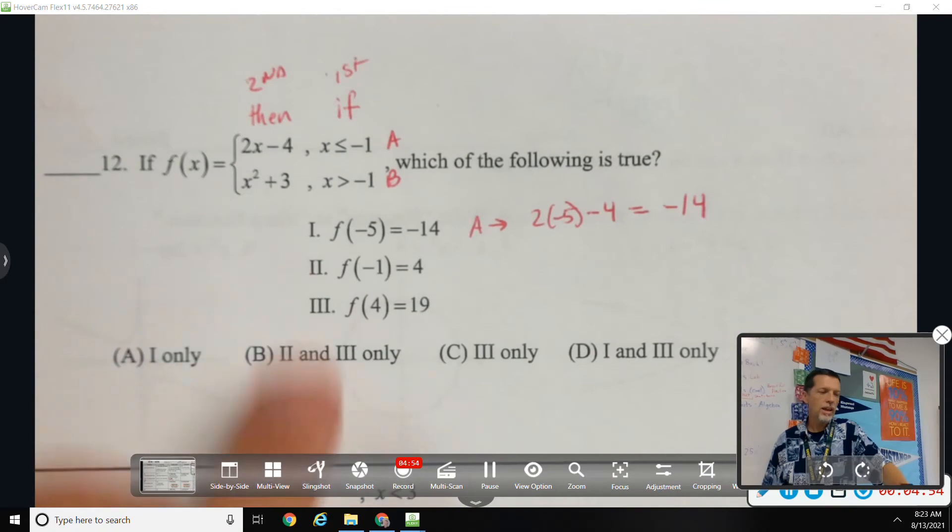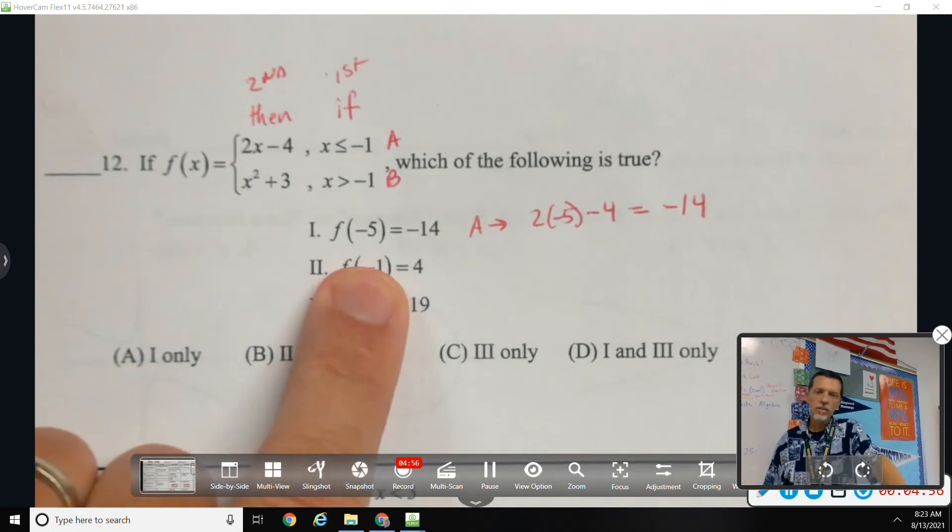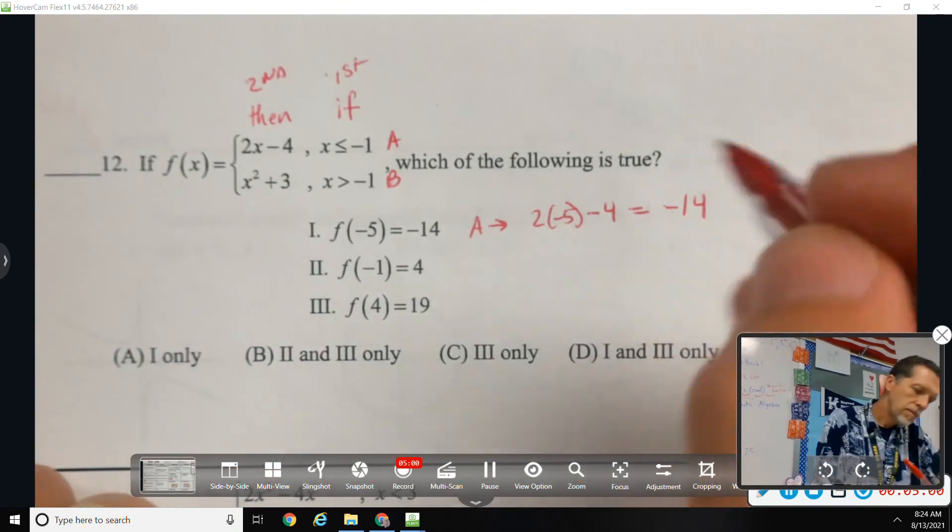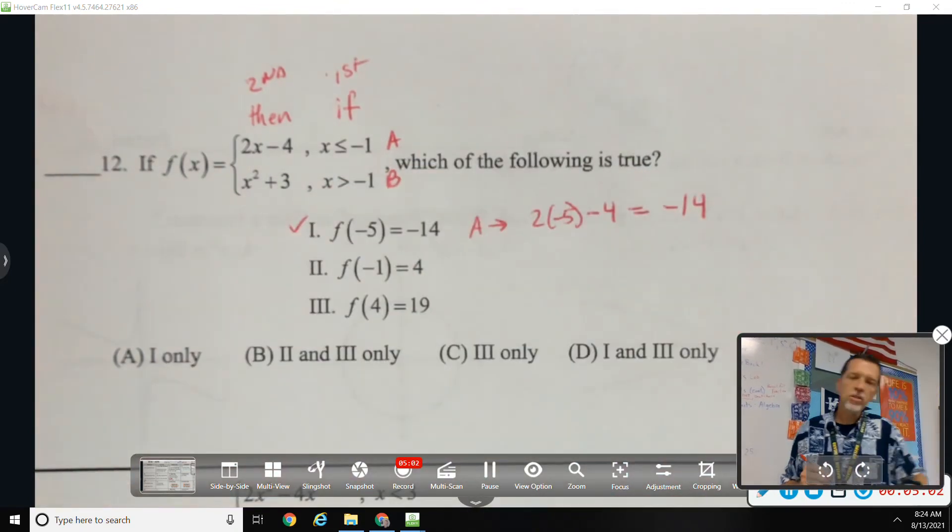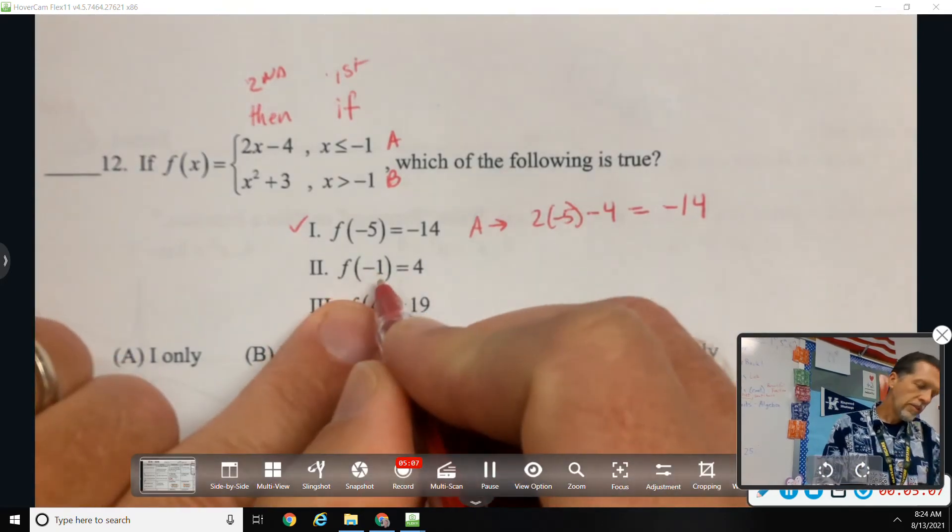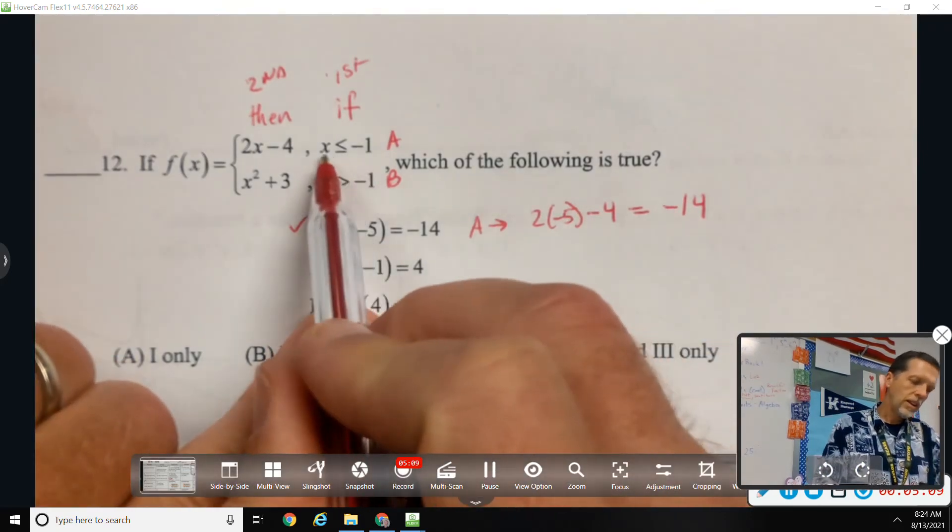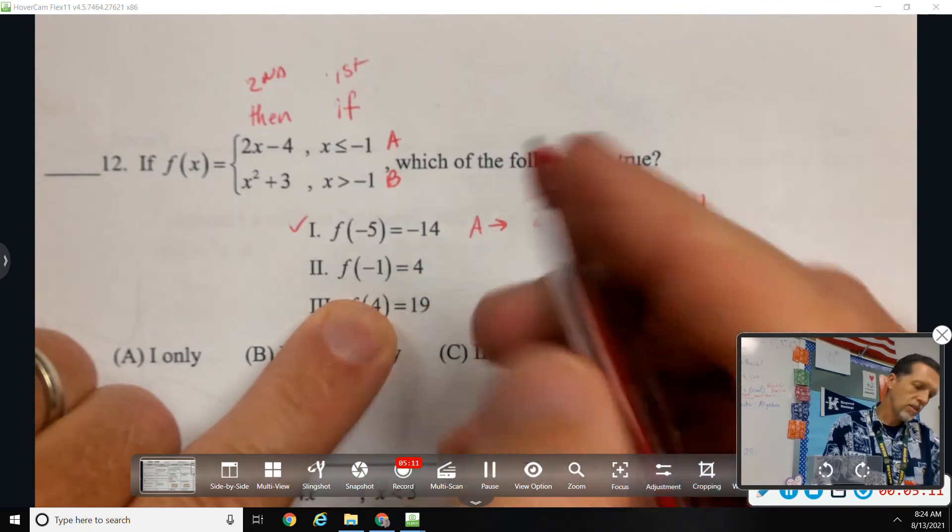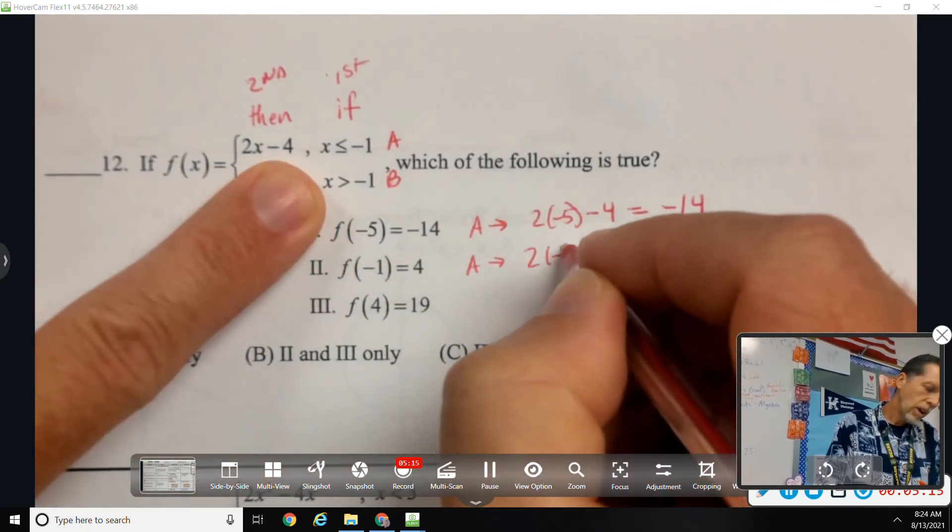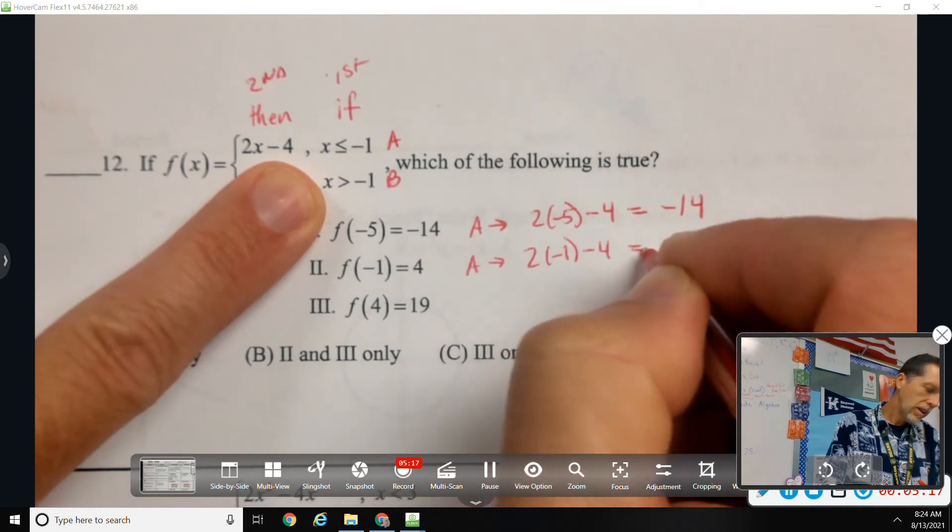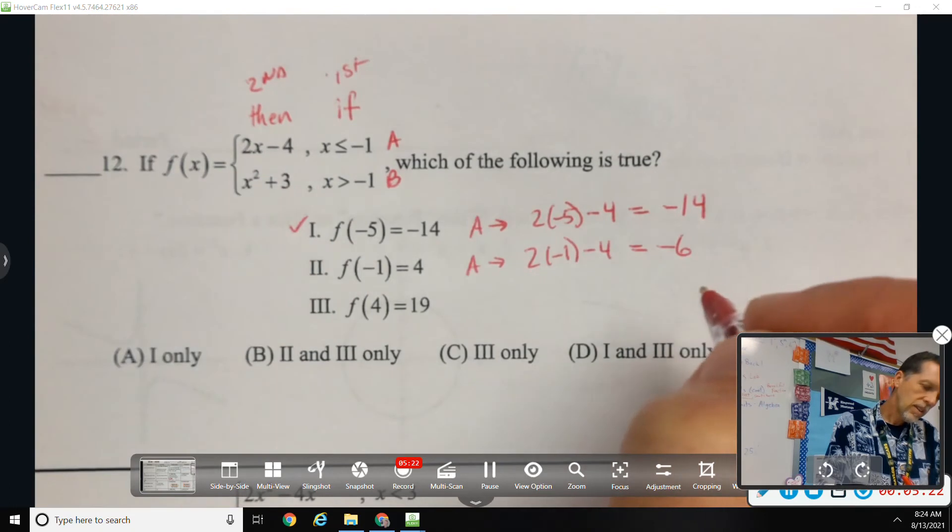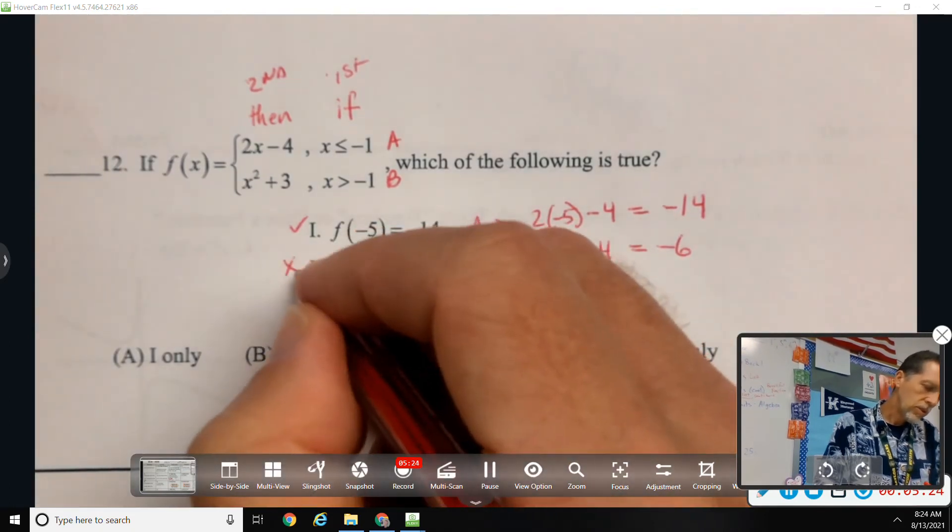And I don't do anything with x squared plus 3 because negative 5 is not greater than negative 1. So statement one is true. Statement two, f of negative one. Let's see, negative one is equal to negative one, so I can use branch a. So 2 times negative 1 minus 4, that would be negative 6. So 2 is not true.